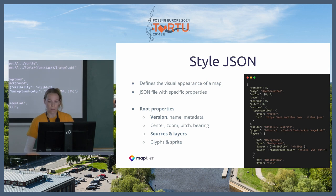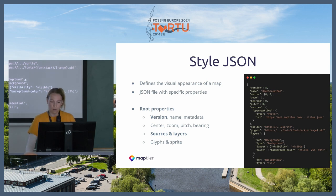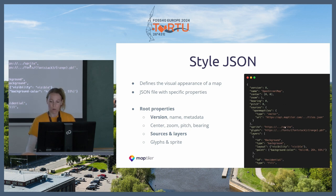That group defines the initial rendering position of the map — for example, focused on Tartu. Then sources and layers: these are pretty important properties because with sources you are calling your data into the map, and with layers you are defining the styling itself, the order, and what's where in the map. Then you can also have glyphs for rendering the font and sprites for loading images. Version, sources, and layers are mandatory — you cannot have a functioning style JSON without them.